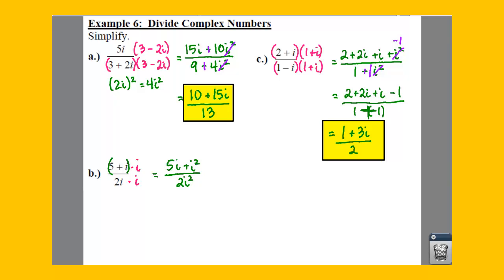So we're going to go through and cancel out our i squared. So this makes us a negative 1 here. This i squared makes us a negative 2.